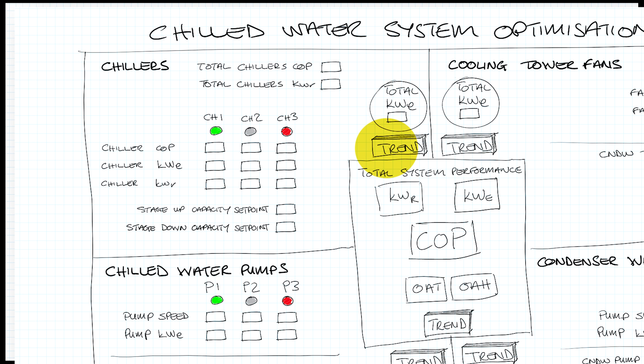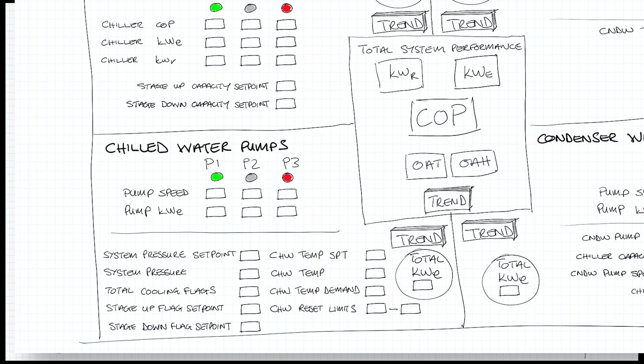There's a trend button - click it and it takes you to a trend of all that information: the COPs, outside air temperature, kilowatts, when you staged up, and so on. In the bottom left I have the chilled water pumps - three pumps, one running - with the speed and kilowatts of electricity for each. Below that I have all the parameters for the system pressure reset, the totalization of the cooling flags, the stage up/stage down flag (similar to ASHRAE 36), and the supply temperature reset strategy, with a trend button showing all of that data.